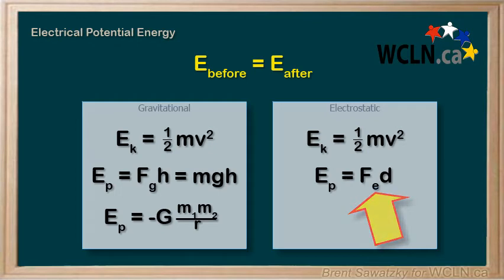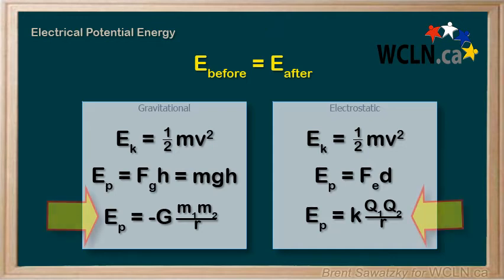And for point charges, recognizing that the electrostatic force will vary, we can use Ep equals k q1 q2 over r. We can compare these two formulas and see that they're amazingly similar.